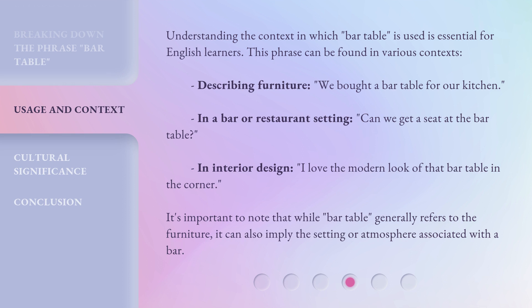Understanding the context in which bar table is used is essential for English learners. This phrase can be found in various contexts: describing furniture — "We bought a bar table for our kitchen"; in a bar or restaurant setting — "Can we get a seat at the bar table?"; and in interior design — "I love the modern look of that bar table in the corner."